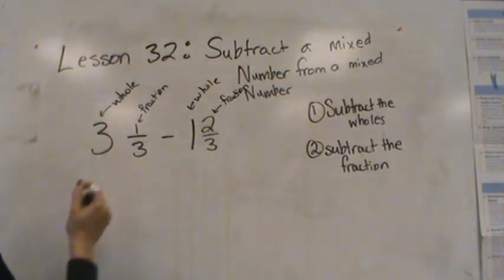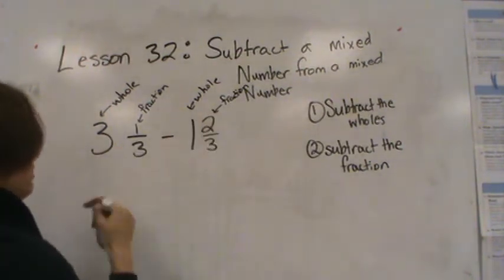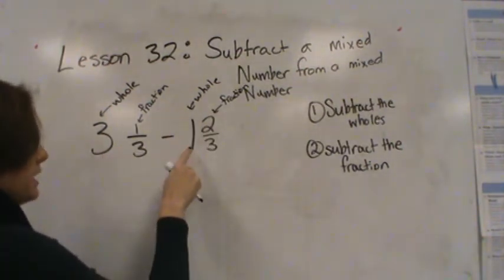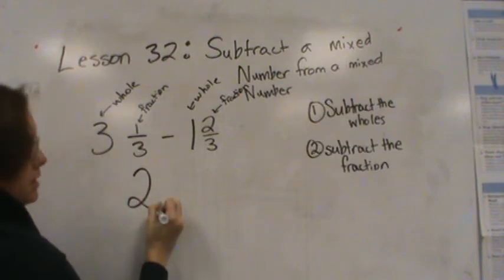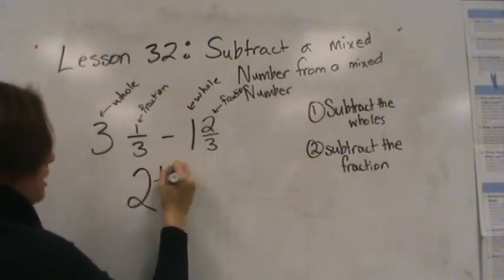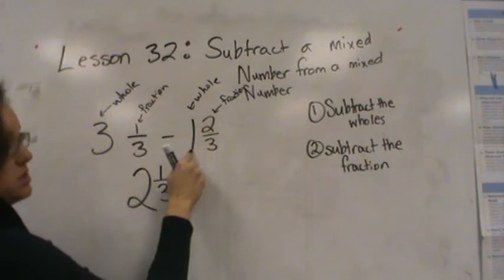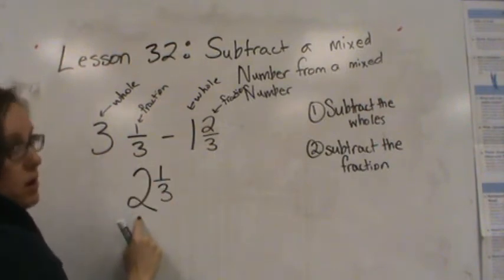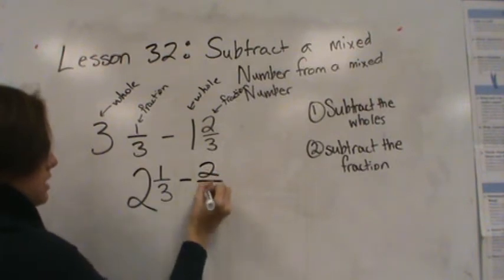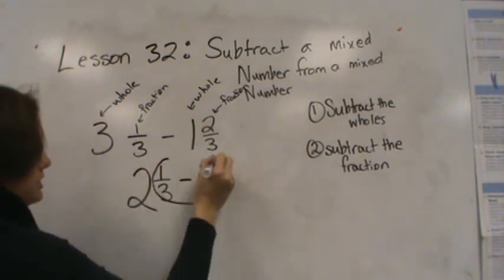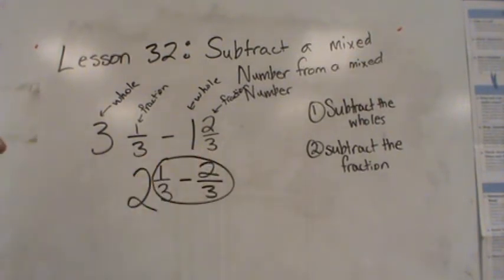So I'm going to subtract the whole first as per my directions. So 3 minus 1 is 2. So I have 2 and 1/3, because 3 minus 1 is 2, and 1/3 minus 2/3. Now looking at these fractions, I'm going to see that I need to regroup, because 2/3 is bigger than 1/3.